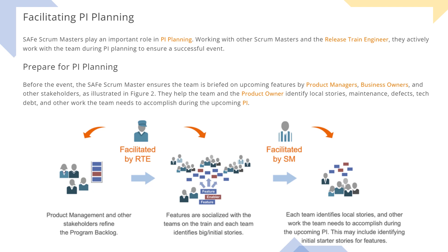They help the teams in preparing for PI planning before the event. The SAFe Scrum Master ensures the team is briefed on upcoming features by the product managers, business owners, and other stakeholders. As illustrated in this picture, they help the team and the product owner to identify local stories, maintenance defects, technical debt, and other work the team needs to accomplish during the upcoming PI.